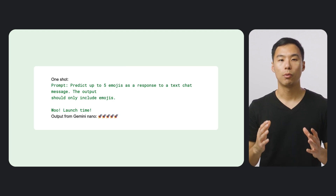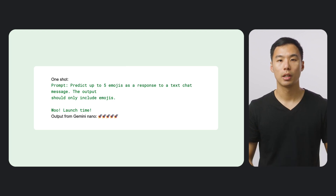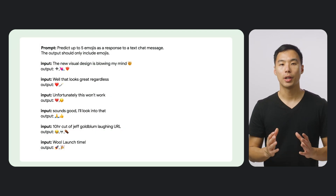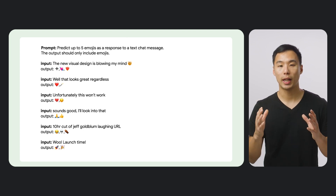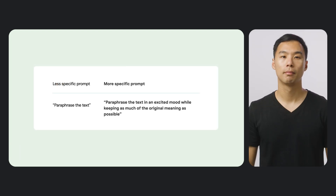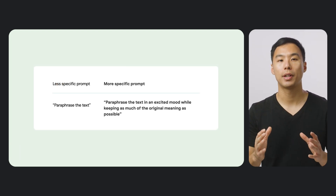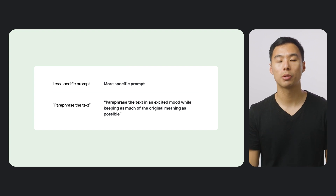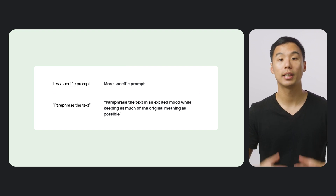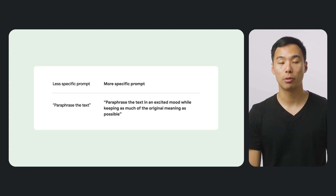Here's an example of what you can do for smart replies using emojis. When we just ask the model to predict emojis as a response to text messages without giving it any examples, it just gives five copies of the same emoji. However, after providing it with several examples of what you'd like it to do, it was able to provide two different emojis and even separate them with a comma. Lastly, we encourage you to be more specific with your request, since Gemini Nano models are much smaller than cloud-based equivalents. For example, instead of simply asking the model to paraphrase the text, you may try asking it to paraphrase the text in an excited mood while keeping as much of the original meaning as possible.